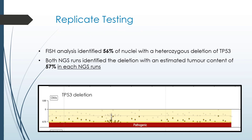We ran two patients in duplicate. One patient had a heterozygous deletion of TP53 identified in 56% of nuclei by FISH. This patient was run in duplicate in two separate NGS runs and in both instances the tumor content estimate by the NGS platform was 57%, showing good correlation with the FISH analysis. This may be important as there is growing evidence that the percentage of abnormal nuclei by FISH may play a role in prognosis, indicating that tumor content estimated by NGS serves as a good surrogate for FISH.